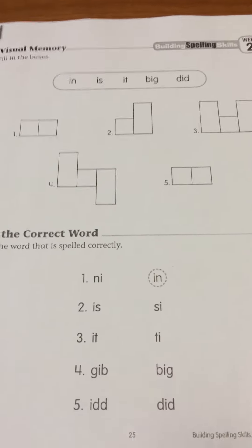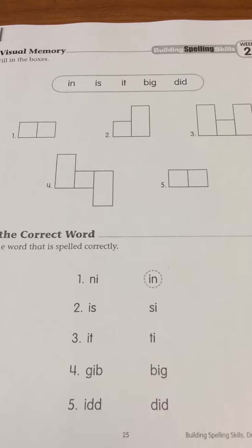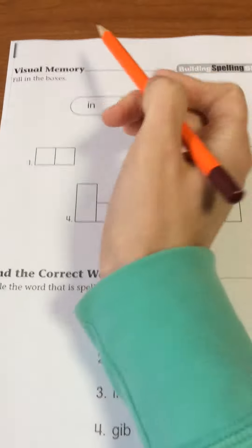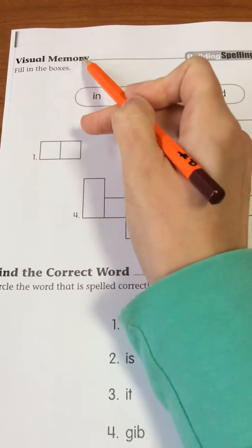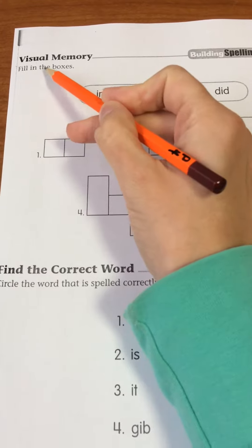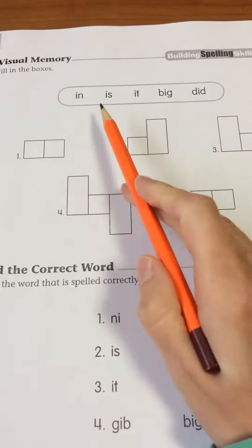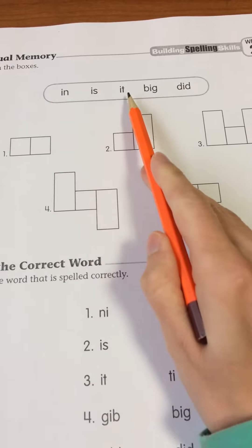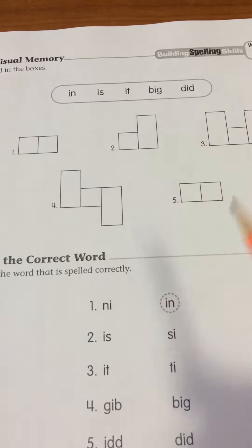Building Spelling Skills, Week 2, page 25. Up at the top it says visual memory. Fill in the boxes. And our words are in, is, it, big, and did.